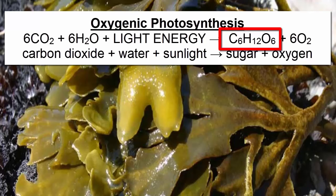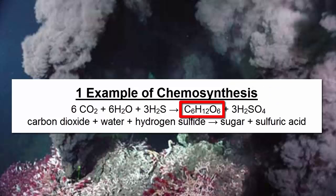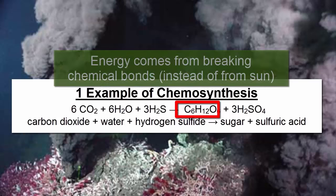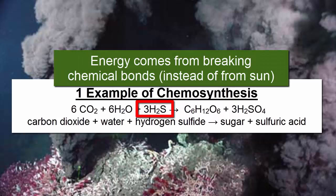Although photosynthesis is by far the most common form of sugar synthesis at work on Earth today, another process at work where light is absent is called chemosynthesis. Instead of harnessing energy from the sun, chemosynthesis harnesses energy held within chemical bonds of gases and minerals.